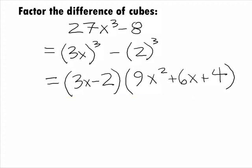This gives us a final answer of 3x minus 2, times 9x squared, plus 6x, plus 4.